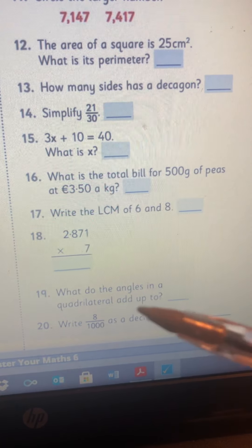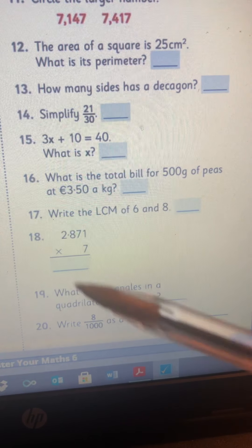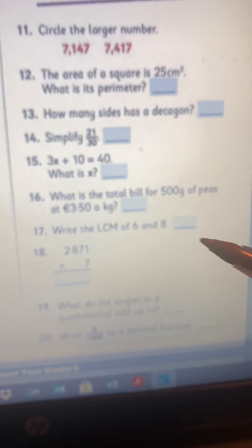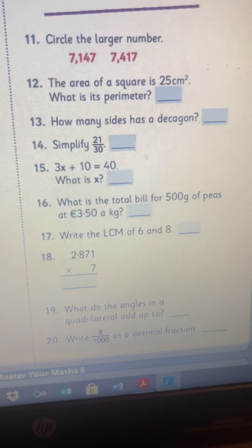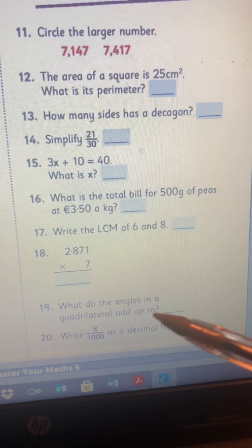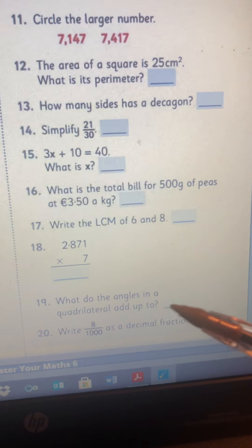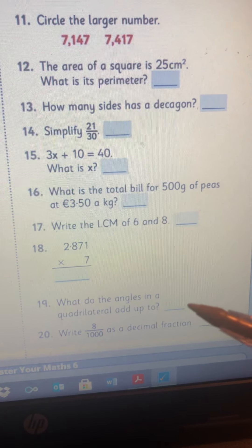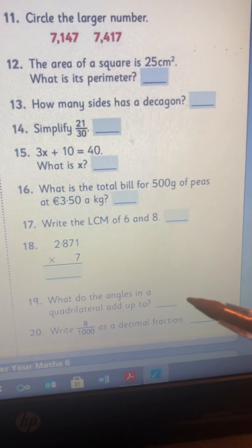And 18, 19, again just in 18, make sure you have three decimal places in your answer. 19, what do the angles in a quadrilateral add up to? 20, hopefully you know that. If you don't, go back through your maths because it has come up before.